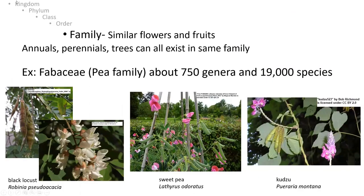We kind of skipped over order — order is really just closely related families grouped together. The family level is where plants are classified by their flowering and fruiting structures.